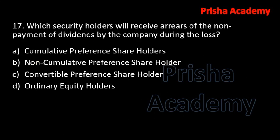Next question: which security holders will receive arrears of non-payment of dividends by the company during a loss? Options are cumulative preference shareholders, non-cumulative preference shareholders, convertible preference shareholders, and ordinary equity holders. The answer should be cumulative preference shareholders.